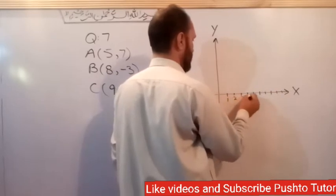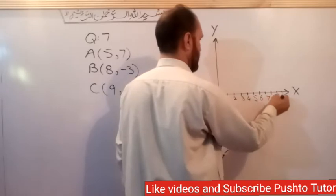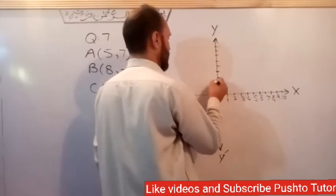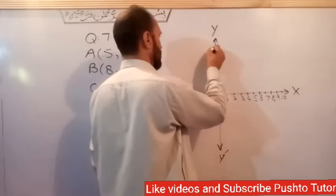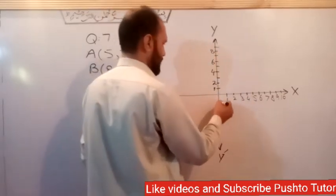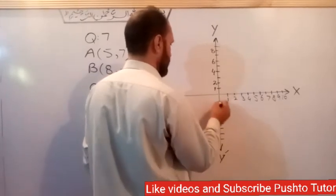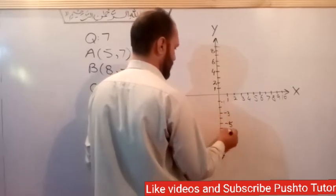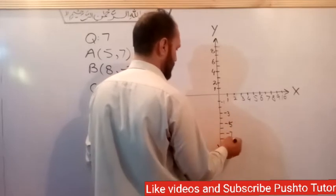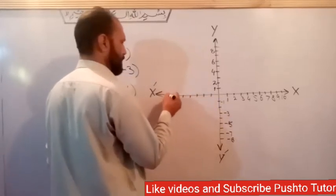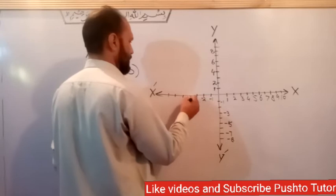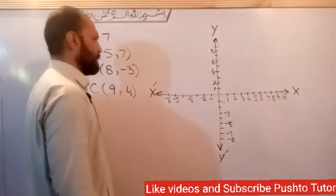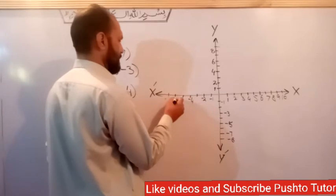On the positive x-axis: 1, 2, 3, 4, 5, 6, 7, 8, 9, 10. On the positive y-axis: 1, 2, 3, 4, 5, 6, 7, 8. On the negative x-axis: minus 1, minus 2, minus 3, minus 4, minus 5, minus 6, minus 7, minus 8. On the negative y-axis: minus 1, minus 2, minus 4, minus 5, minus 6.